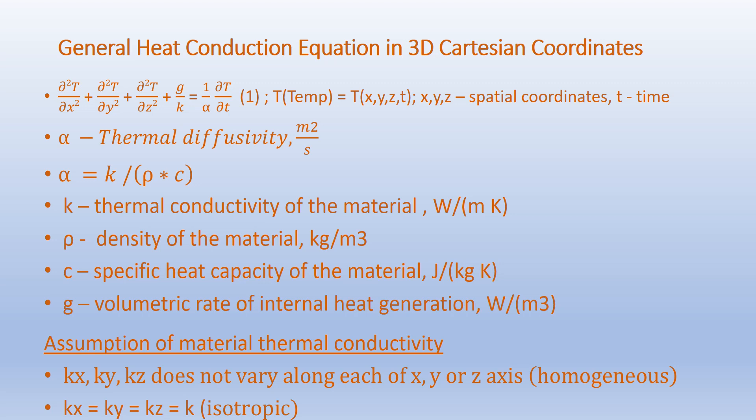We have the following assumptions on thermal conductivity: the thermal conductivity along each direction kx, ky, and kz is considered uniform and hence homogeneous. Also, kx = ky = kz = k, meaning the thermal conductivity does not vary with direction, so we comply with the isotropic condition.